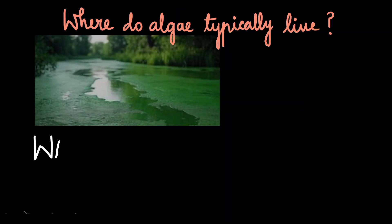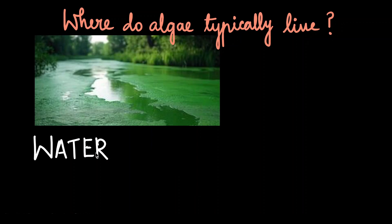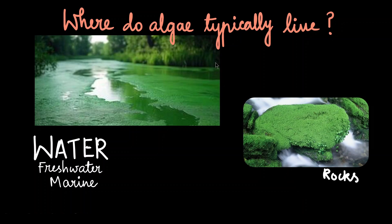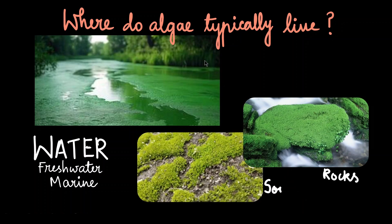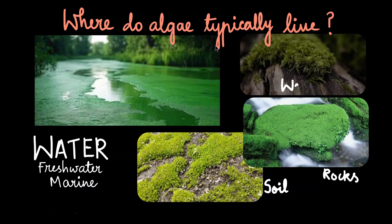Algaes are mostly aquatic. They are found both in freshwater as well as marine waters, but they are found on land as well. Land features like rocks, soils, and even wood are seen to have algal growth on them.